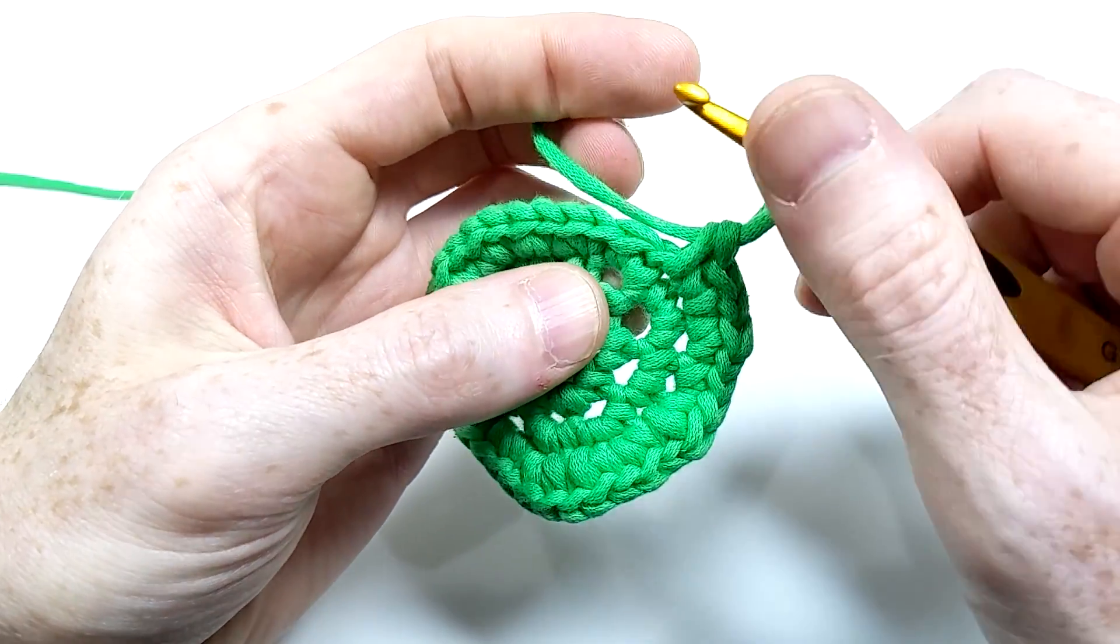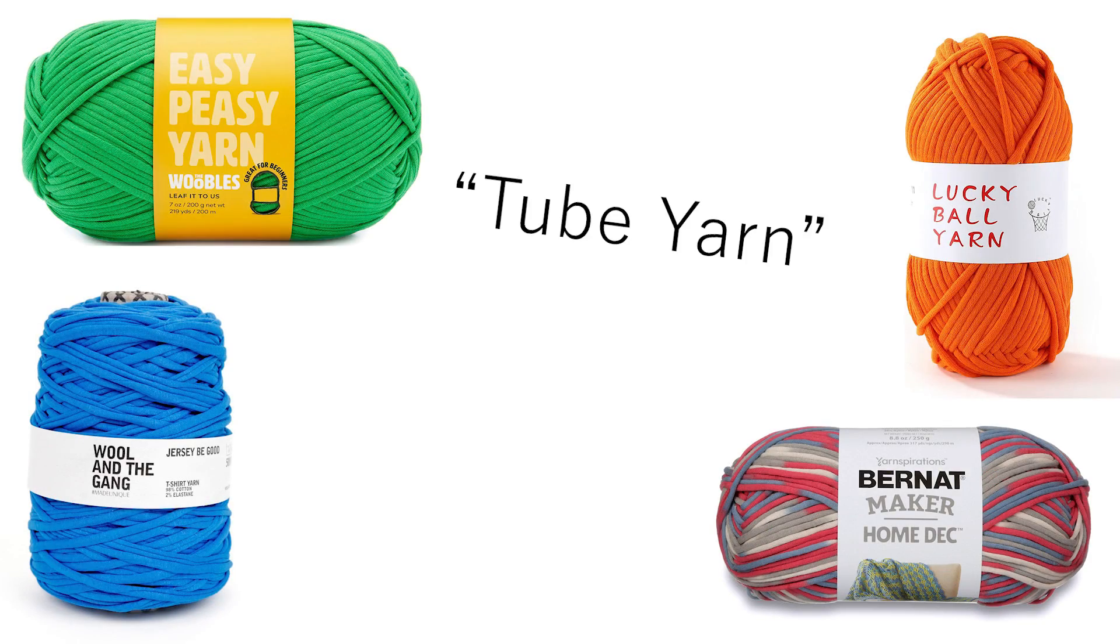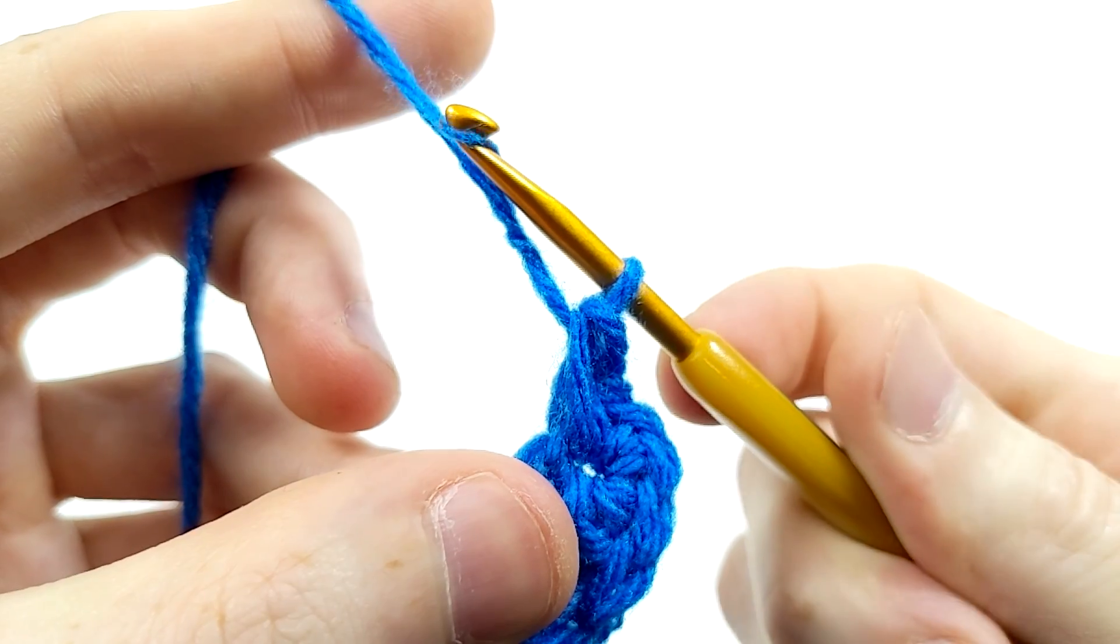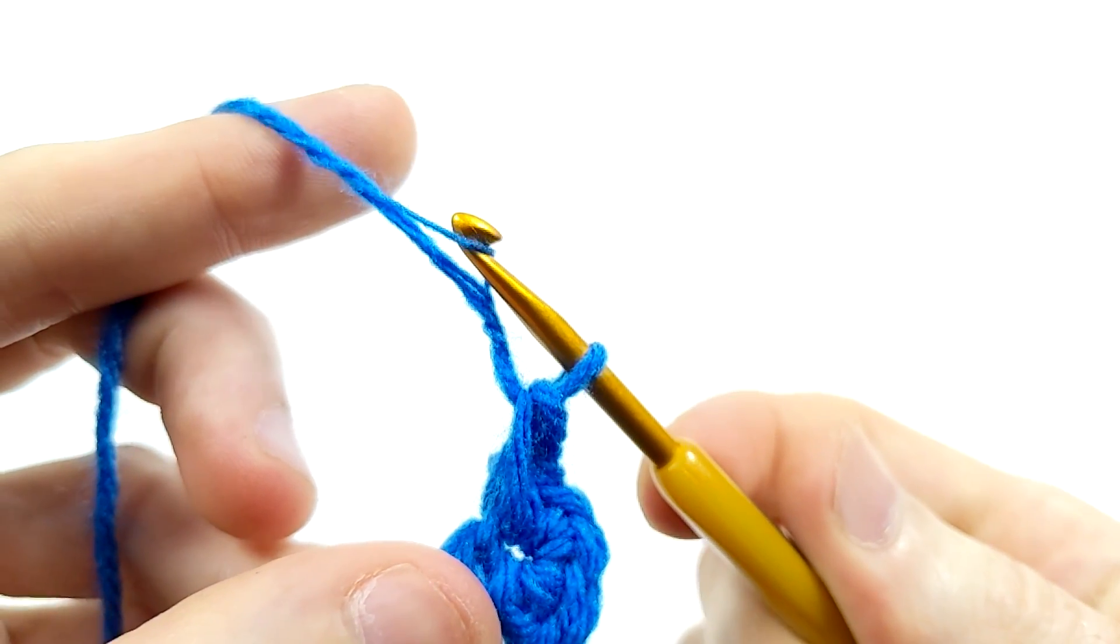Another thing to mention is I'm using a special kind of yarn called tube yarn or beginner yarn. The stitches show up a lot more clearly, especially on camera, and you never accidentally pull partial threads, so it's a great option if you can find it.